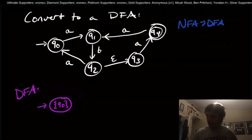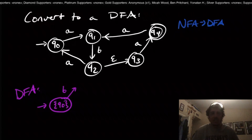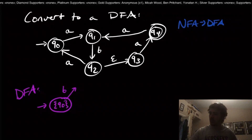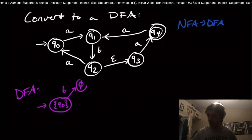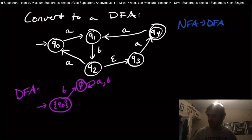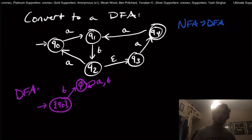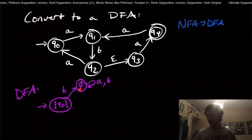We can do the B transition really easily. If you can't go anywhere, the set of states you can go to is empty. So the name of the state we go to is the empty set, representing no reachable states. If you're in the empty set and you read an A or B, you can only stay right there, because you're not in any state to start with.